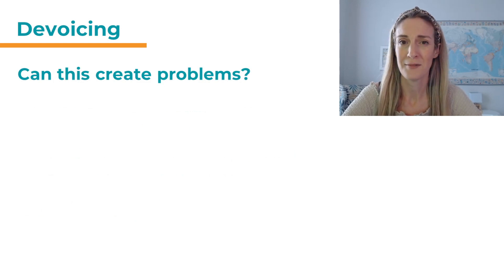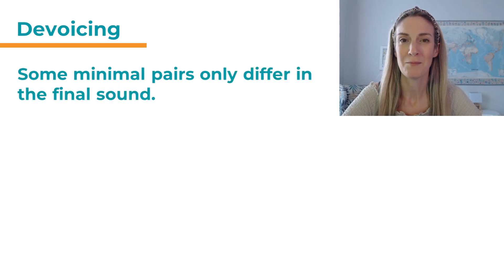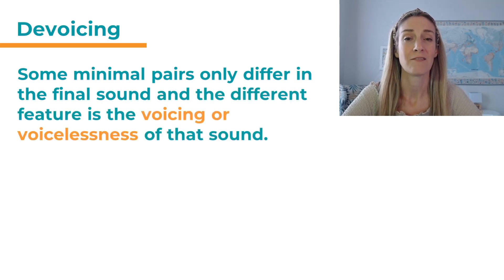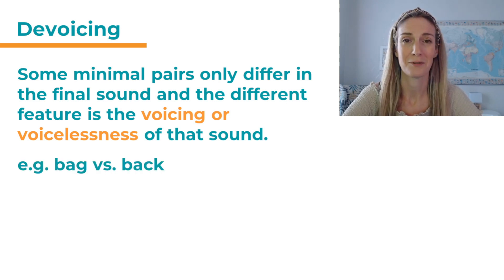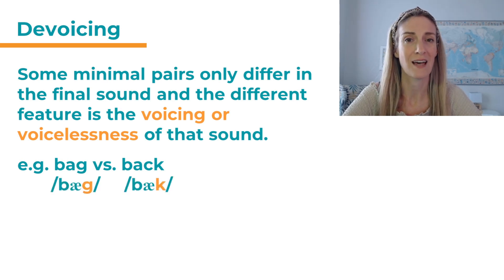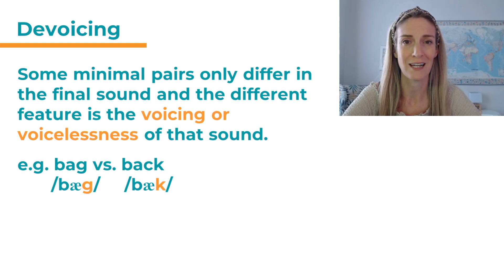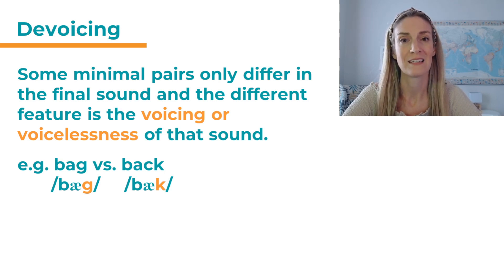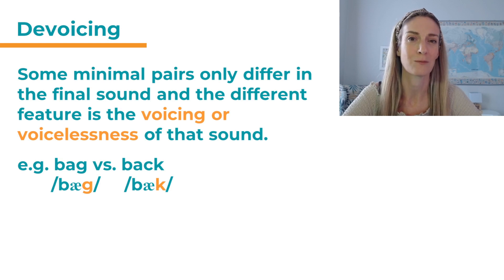Can this create problems? Yes, for the listener. Some minimal pairs only differ in that final sound, and the final difference is voicing or voicelessness of that sound. For example, 'bag' and 'back'. The only difference here really is the final sound. And remember, those are counterparts — they have the same place and manner of articulation, but the difference is voicing. So 'bag' has 'g' which is voiced, and 'back' has 'k' which is unvoiced.